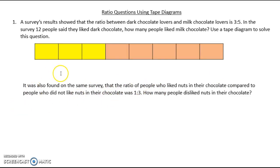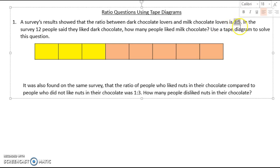So the first thing I need to do is create a tape diagram. I would normally just draw this quickly, but since I'm using the computer here, I've used a table. In my tape diagram, I'm going to use the information from the question — specifically the ratio. The ratio is 3 to 5, which means I need 8 segments in my tape diagram — 8 pieces, 8 parts. That's 3 plus 5.